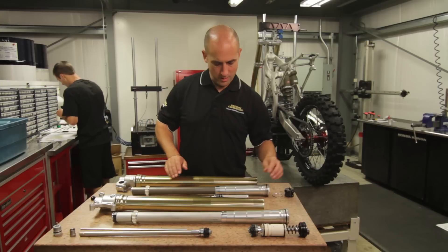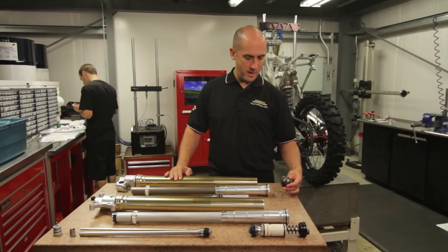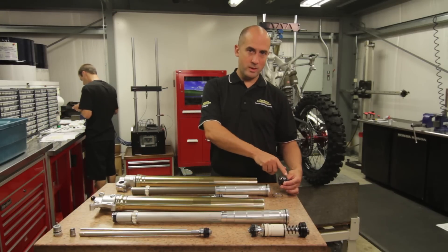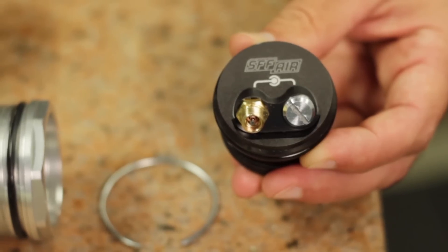And then on the Honda fork they do not actually recommend any air in the outer chamber and this is why this has been fitted with a screw instead of a Schrader valve.